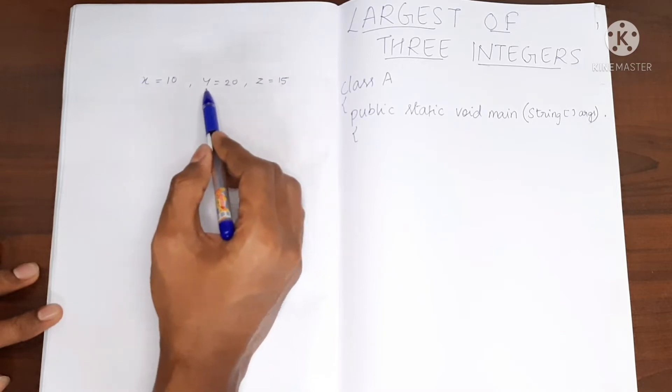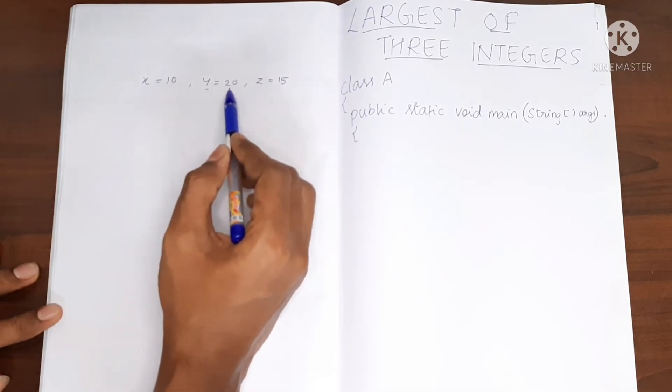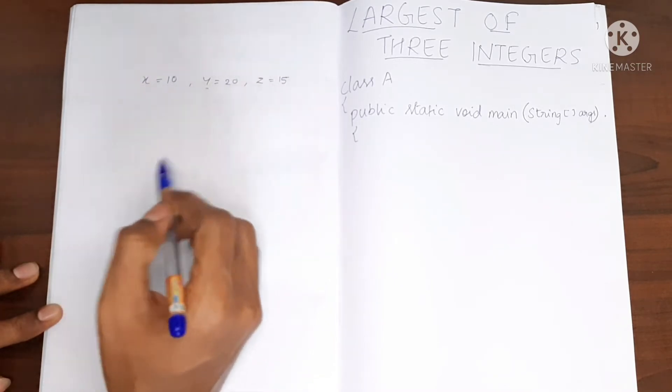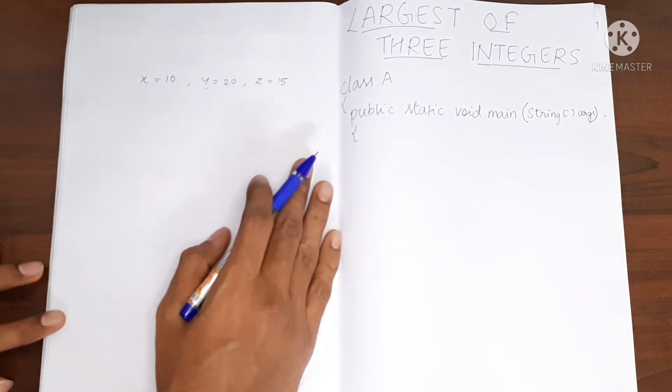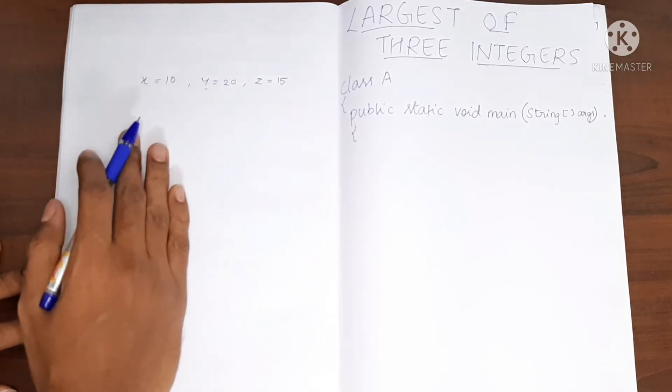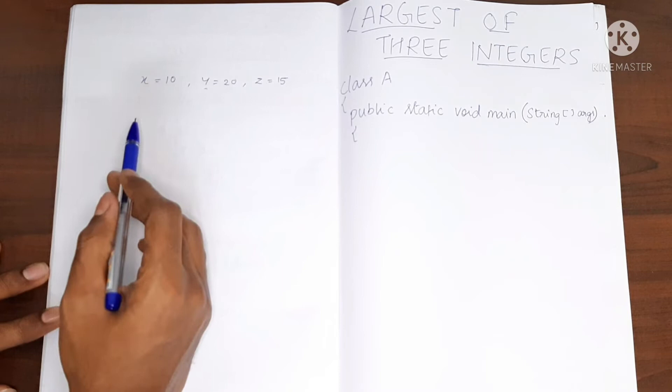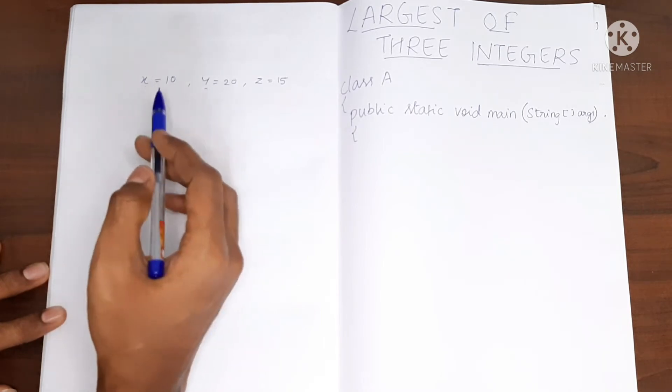Clearly it is y, which is 20, and that is our required output. This program is very simple. All we're going to do is use if statements to compare and find out.